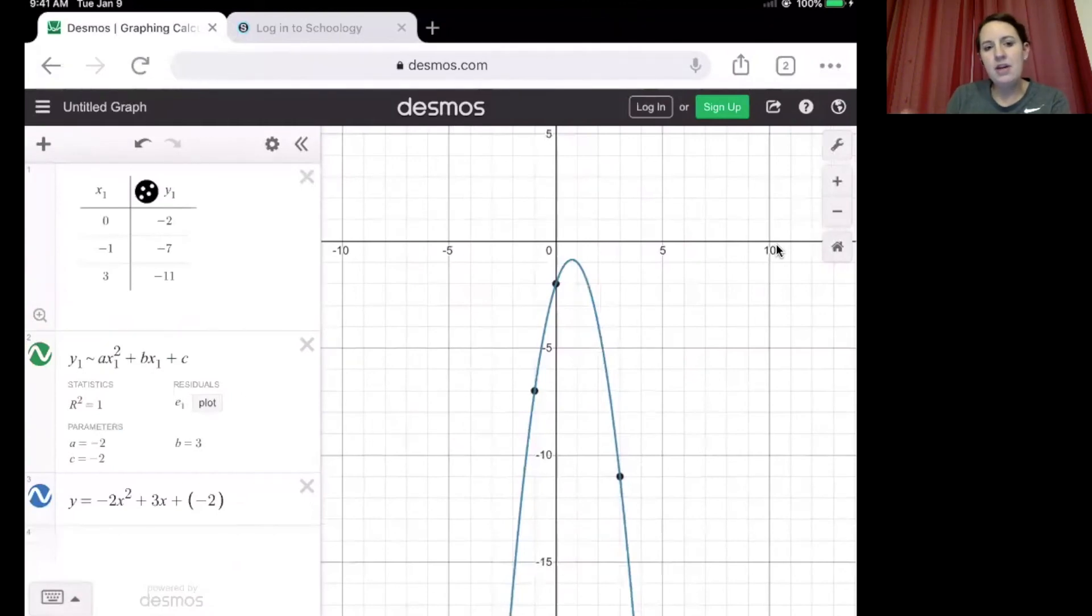So we created our table. We wrote the standard form of our parabola, making those couple of changes, adding the ones after our x's and y's, changing the equal sign to a squiggly approximation. And then we have our a, b, and c values that the computer gives us. And we're able to plug those into our standard form to get the equation of the parabola that we initially started with.